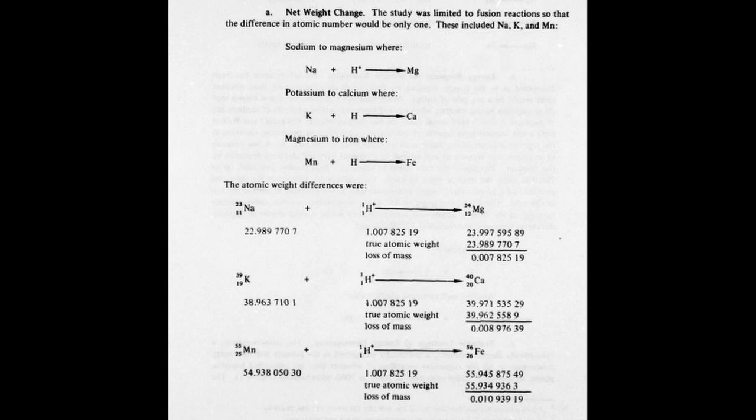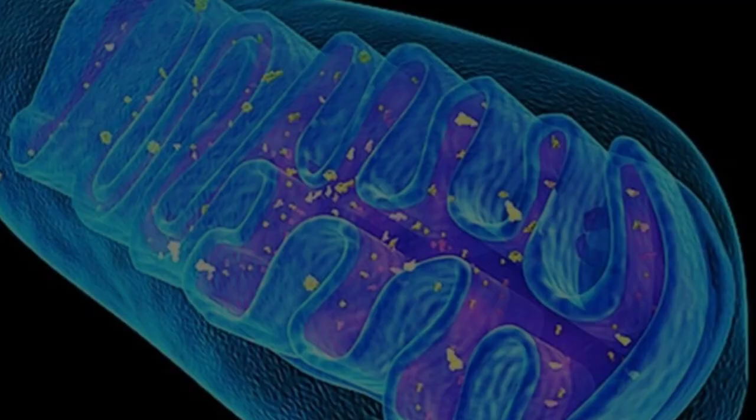They finalise by outlining what the evidence is to support their hypothesis. The net loss of mass when going from one element to the next represents a net amount of energy released. Firstly, the mitochondrion are well known as the location of energy production in the cell.